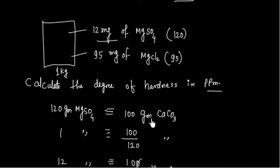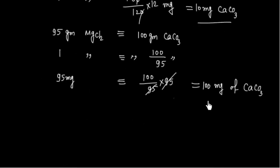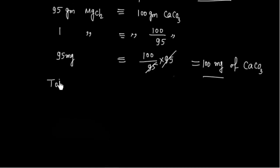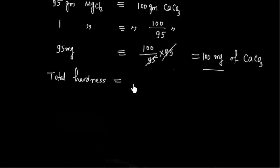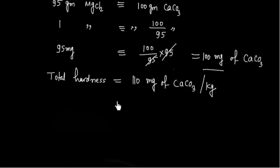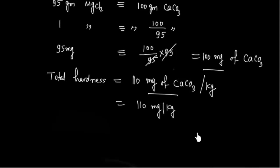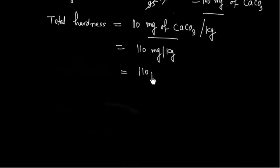So the total hardness of the water is 10 mg + 100 mg = 110 mg of CaCO₃ in 1 kg of water. Since mg per kg equals PPM, the total hardness is 110 PPM.